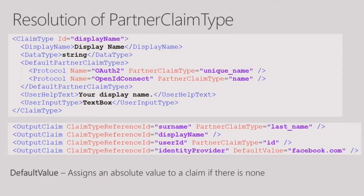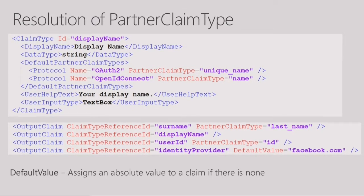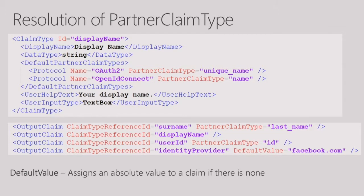When I cover claims transformations, you can basically write a claims transformation and force a value. The default value only applies as a default value if nothing else exists. So the question was whether there's a way to override the value regardless of whether it exists — and the response is that today you can do that using claims transformations, which I'll cover later.